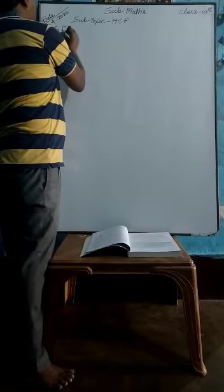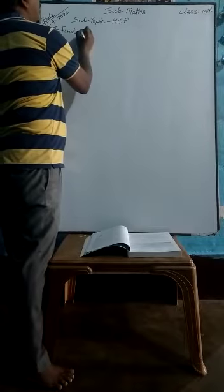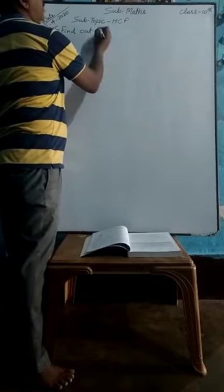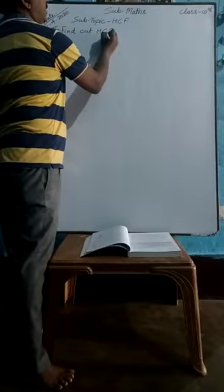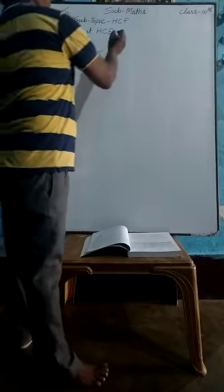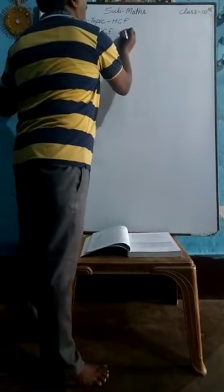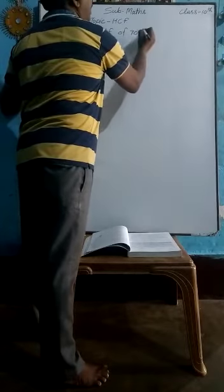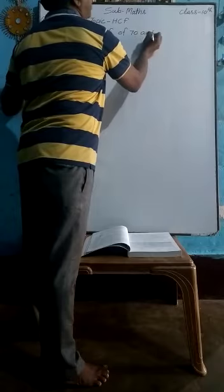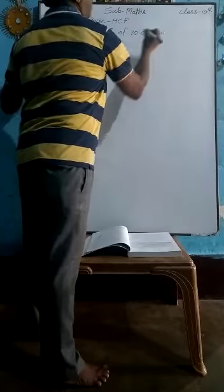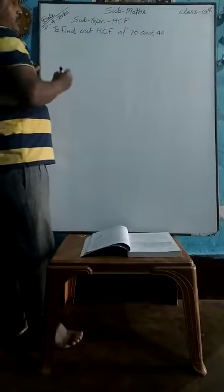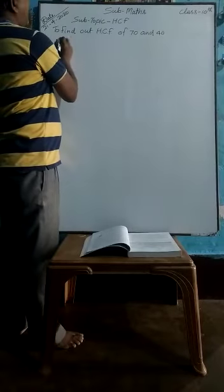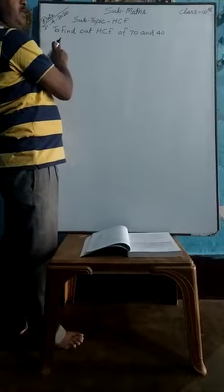To find out HCF (highest common factor) of 70 and 40, use the Euclid division algorithm method given by mathematician Euclid.